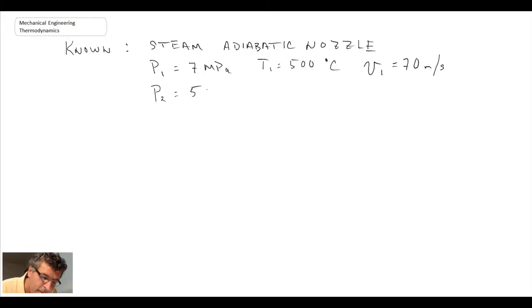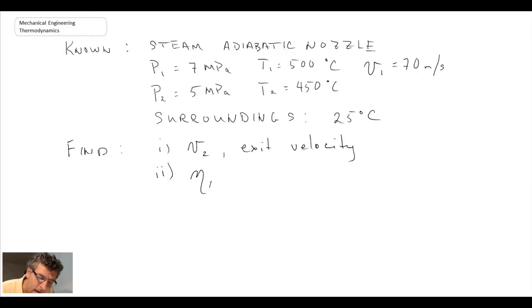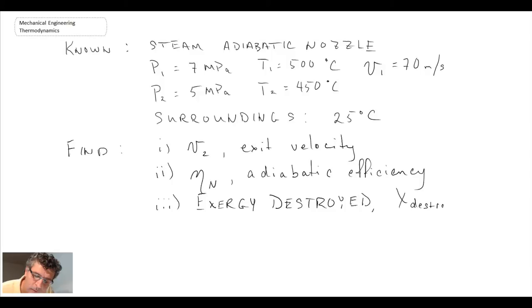At state 2, we have 5 megapascals. Temperature 2 is 450 degrees C. We are not given the velocity; we're told to find that. Another piece of information we're given is that the surroundings is at 25 degrees Celsius. And we're told to find the following: first, velocity 2 or the exit velocity; second, adiabatic efficiency of the nozzle; and third, exergy destroyed.